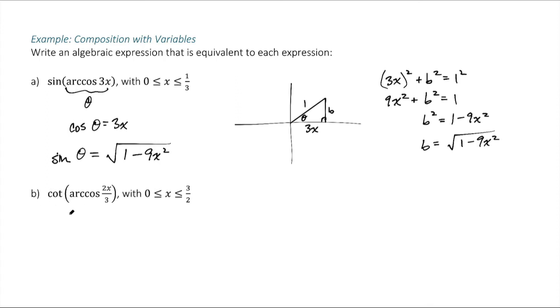All right, so for part b, same idea. We've got here the arc cosine of 2x over 3. That, we're going to call the angle, we'll call it beta. So this says that cosine of the angle beta is 2x over 3.